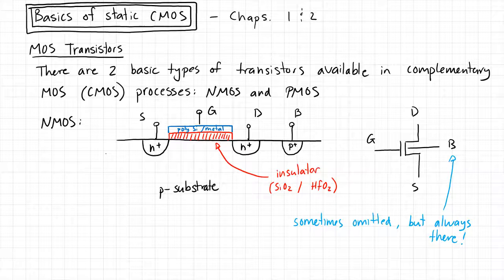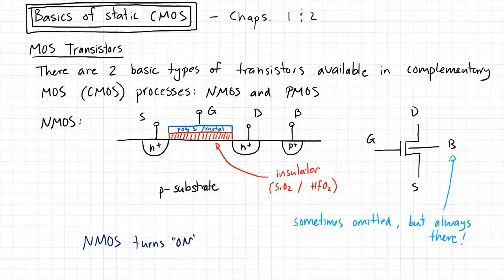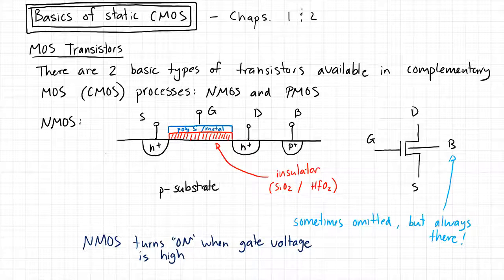An NMOS transistor turns on when the gate voltage is high. This is really going to be the basis of how we actually build digital logic families. We say the gate turns on when its voltage is high, which essentially implies when the input to the transistor is one, then the transistor turns on and something happens at its output.